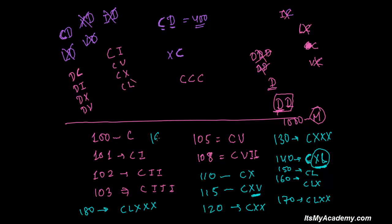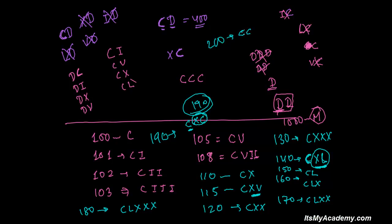For 190, you write C X C. See, after C we expect another C, but we get X — so when you take X C together, X C represents 90. So 190 is C X C. For 200, you write two C's together: C C. For 300, write three C's: C C C — I already told you C can repeat up to three times.